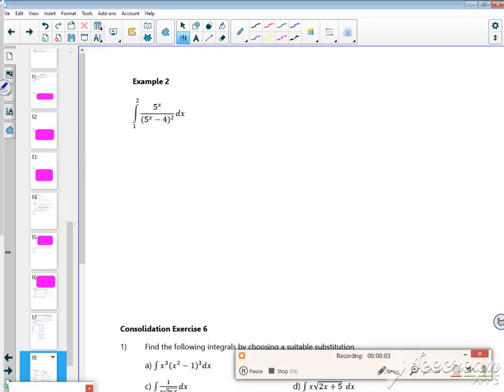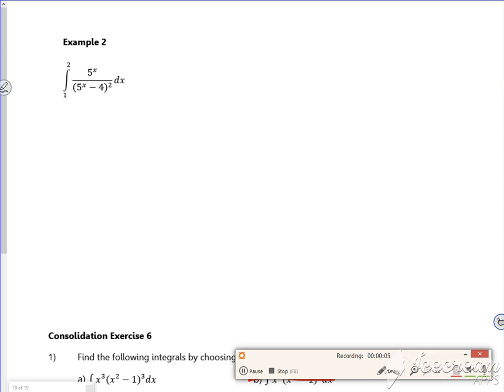Hiya, so same idea with this example. Choose the bit which is inside the bracket. So u is going to be 5 to the x minus 4.